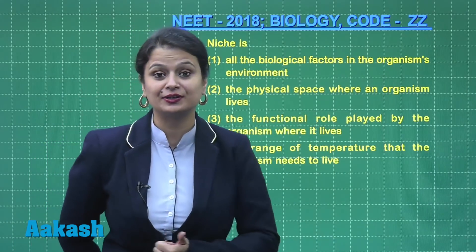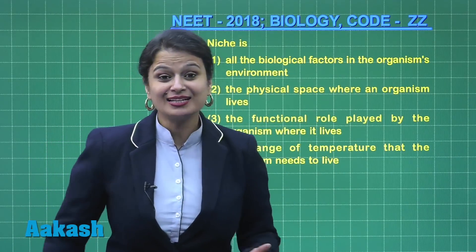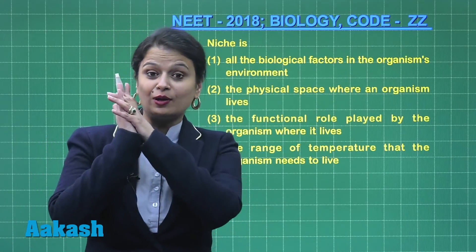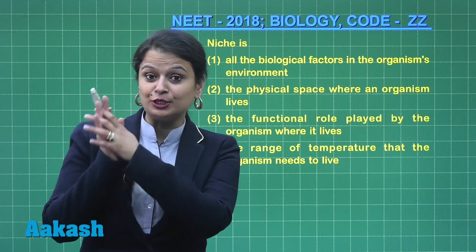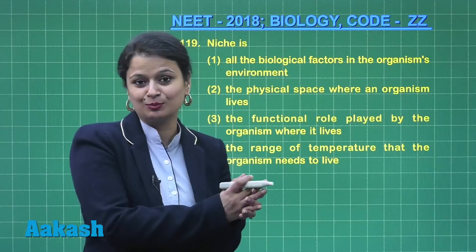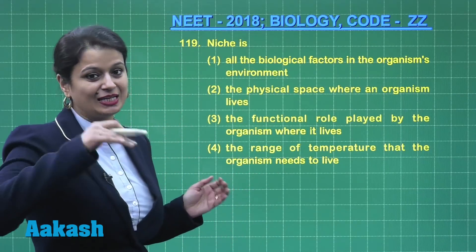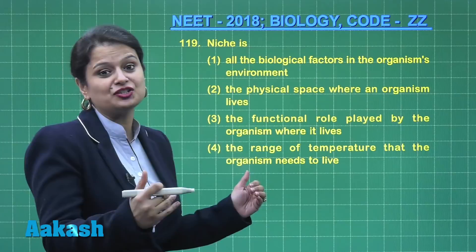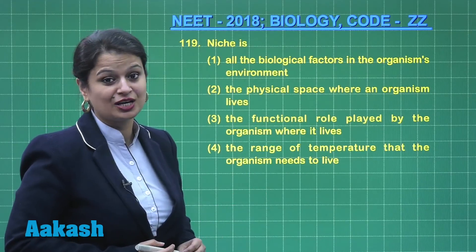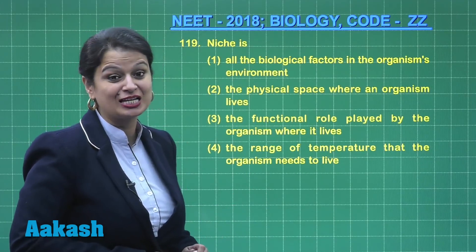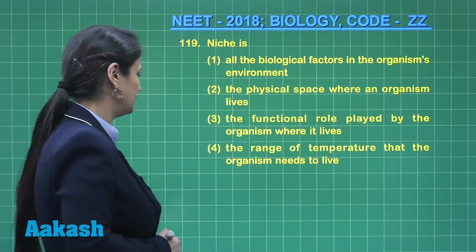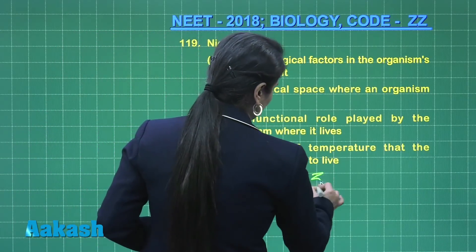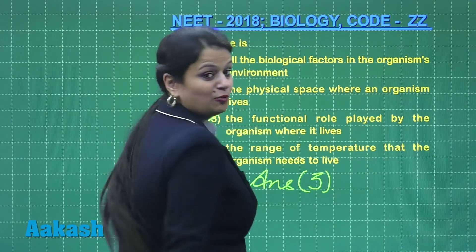Niche is the functional role played by the organism where it lives. It is just like the bio-data of an organism — whether the organism is a producer, consumer, or decomposer. All this represents the functional role of the organism. This niche is known as the functional niche and sometimes also as the trophic level niche. So the right answer for this question is option number three.